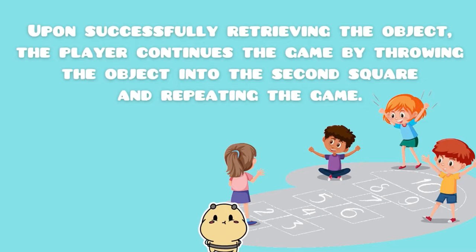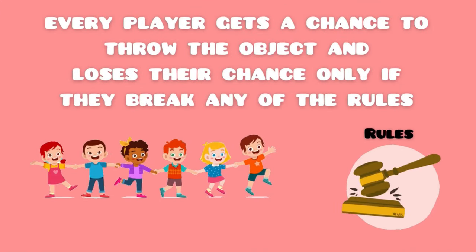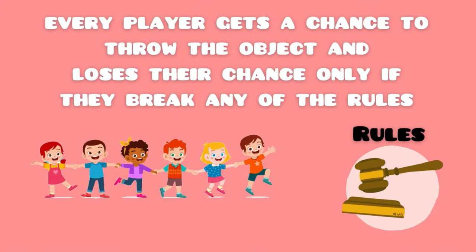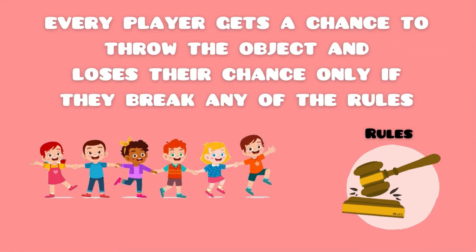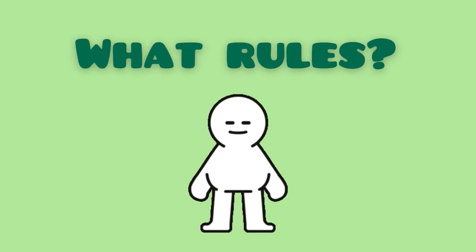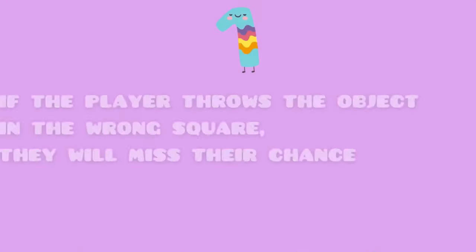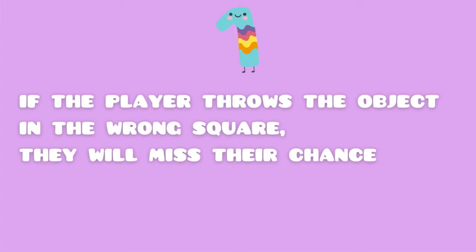Upon successfully retrieving the object, the player continues the game by throwing the object into the second square and repeating the process. Every player gets a chance to throw the object and loses their chance only if they break any of the rules. You may ask — what rules? Let's find out!